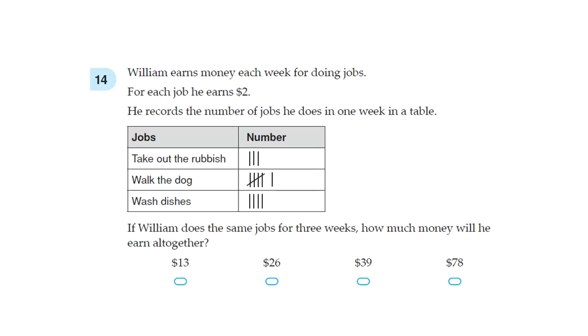Question 14. William earns money each week for doing jobs. For each job he earns $2. He records the number of jobs he does in one week in a table. So let's calculate this.